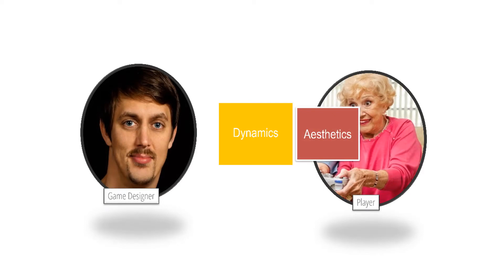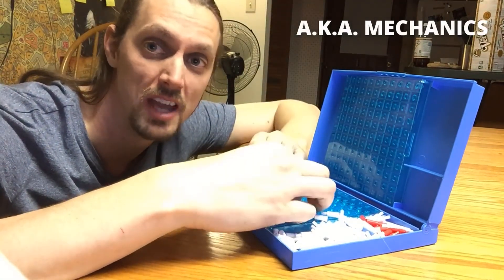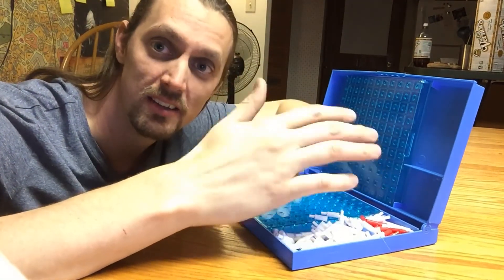Say you want a game that feels dramatic — how is your game's dynamic system going to make your players feel that drama? Maybe the system always ends in the heroes winning in the nick of time, or maybe the system results in many conflicts between important characters. It's up to you to decide what the dynamics of your game will be like, and once you've figured that out you can turn that hypothetical system into rules, components, or even a video game.